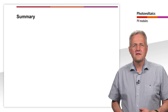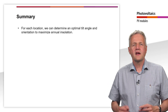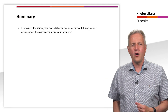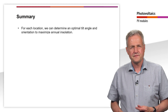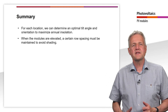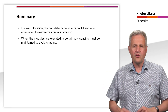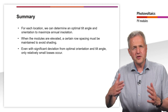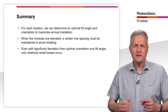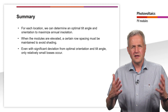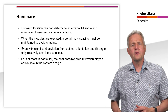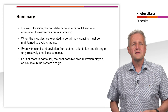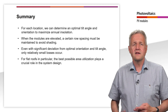Let's summarize this unit. We have learned that we can achieve the highest yield per module by choosing the optimal tilt angle as well as the optimal orientation for a given location. When the modules are elevated, a certain row spacing must be maintained to avoid shading. We have seen that even with a significant deviation from optimal orientation and tilt angle, only relatively small losses occur. Especially for flat roofs, the best possible area utilization plays a crucial role in the system design. Therefore, these systems are often designed in an east-west orientation. Thank you for your attention.